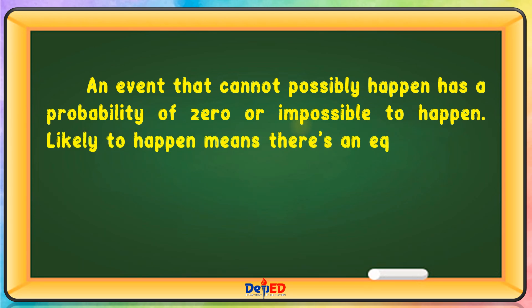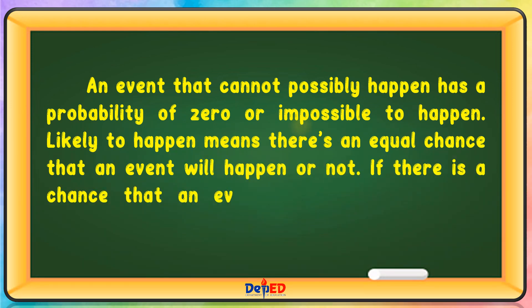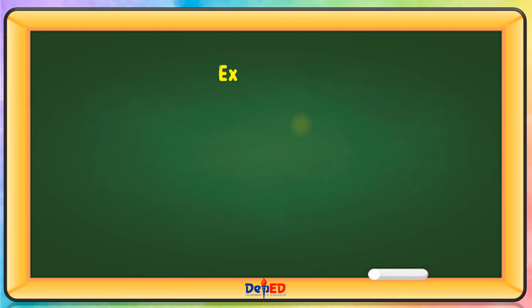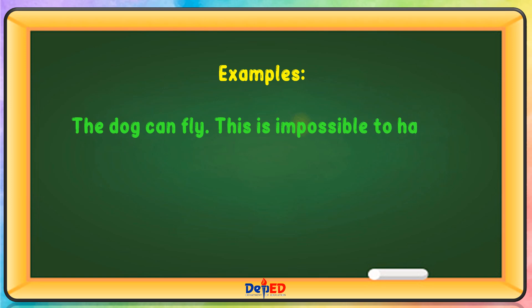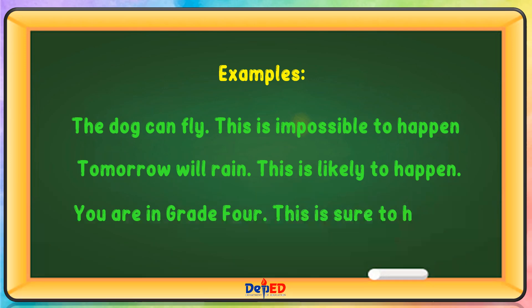Likely to happen means there is an equal chance that an event will happen or not. If there is a chance that an event will happen, then its probability is 1 and it is sure to happen. Examples: The dog can fly — this is impossible to happen. Tomorrow will rain — this is likely to happen. You are in grade 4 — this is sure to happen.